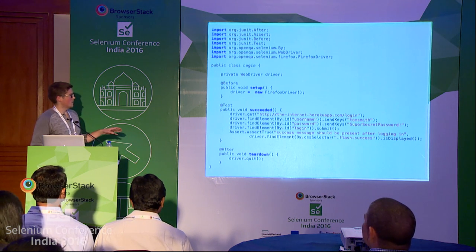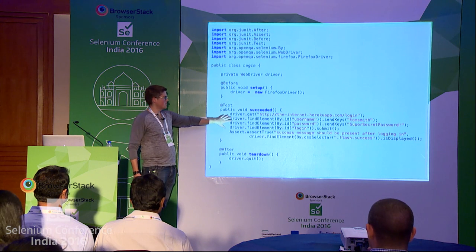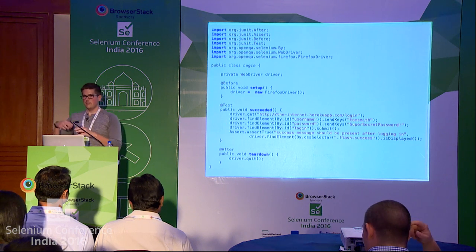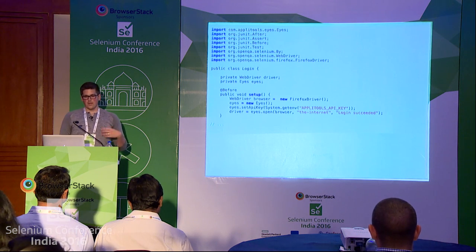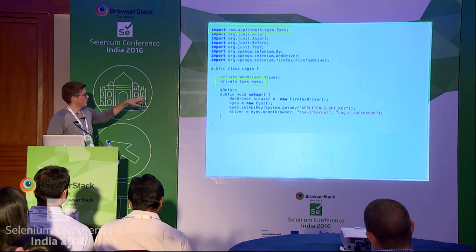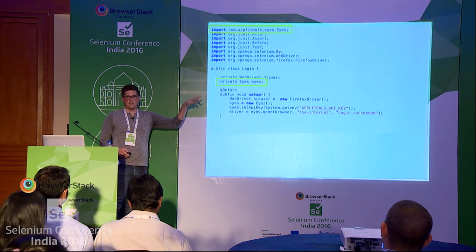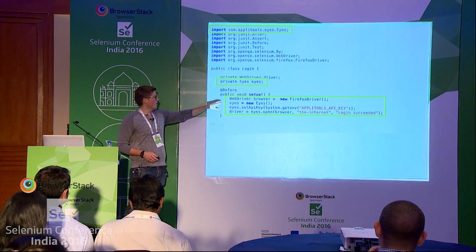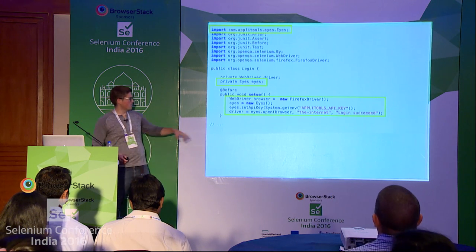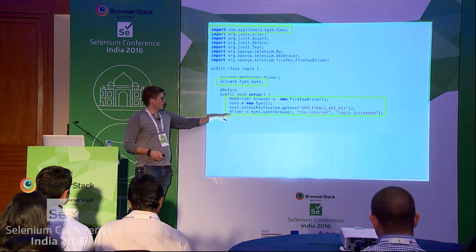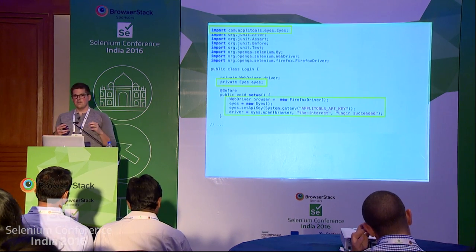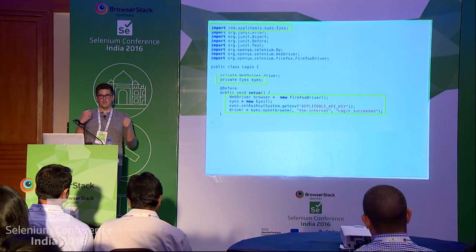I have a really simple test here — it's just a login test. It sets up a new Firefox instance, visits the page, fills in a login form, submits it, and then verifies that the success message appeared, then tears down the browser. But if we wanted to add in a visual check to this page, we'd pull in the SDK, create a field variable to store the Eyes instance, and make a couple of changes to the setup. We store the browser instance in a local browser variable, which we pass to Applitools Eyes after creating an instance and setting the API key. When we call Eyes.open, we pass a browser session with some metadata, and they return back a slightly modified driver object so Eyes can take screenshots when we tell it to.